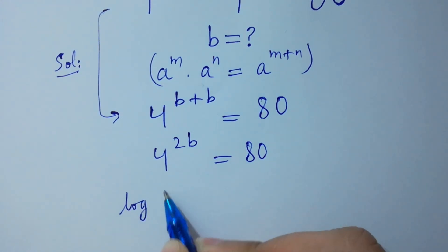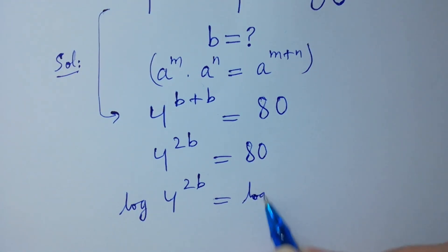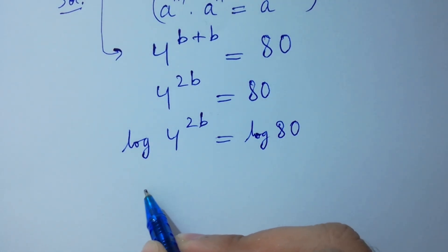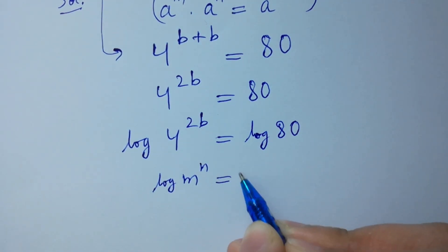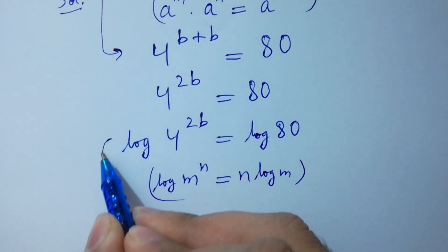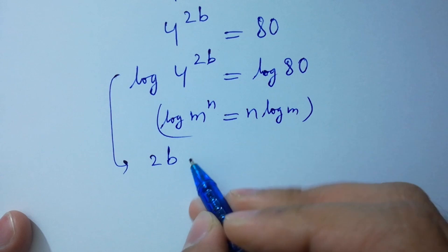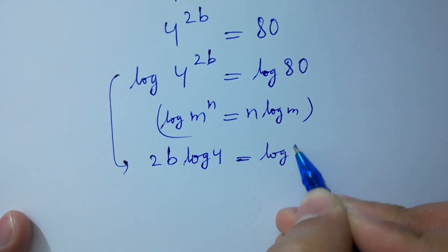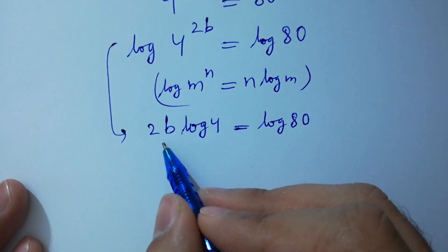Log of 4 to the power 2B equals log 80. Since log m to the power n equals n log m, so we have 2B log 4 equals log 80. Let's divide by log 4 on both sides.